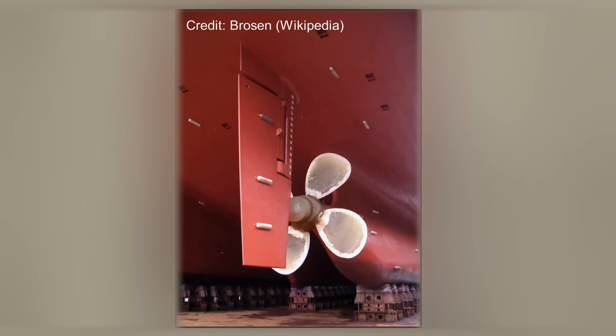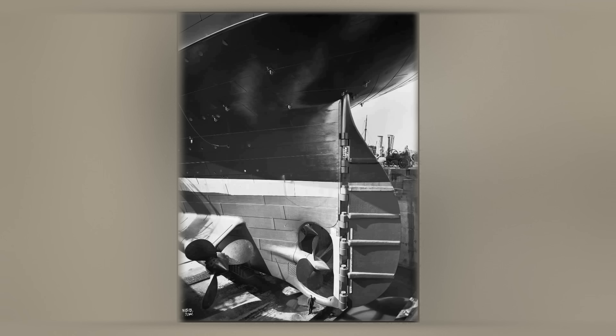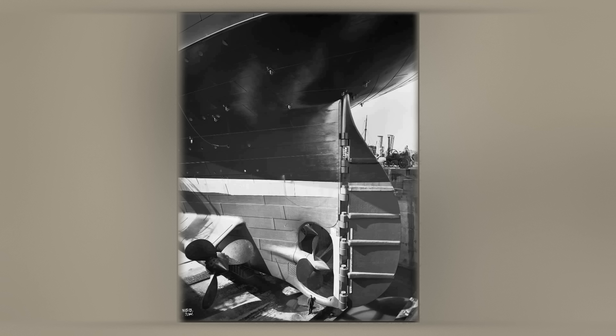A tiller was then attached to the stock, allowing sailors to control the rudder from the main deck. The basic setup continued right up until modern times. This is the rudder of the Olympic, and you can see that it carries the same characteristics as the original steering board. It's a small flat board mounted on a stock passing through the ship. Let's have a look at how this one works.